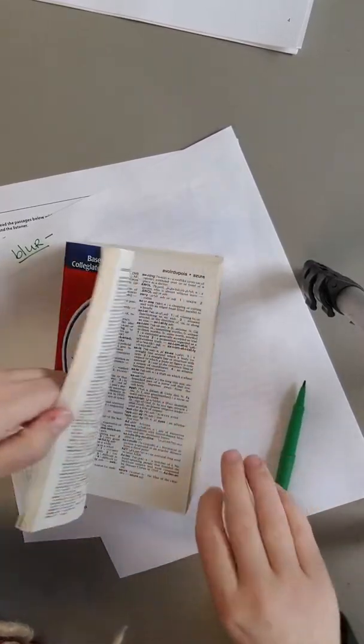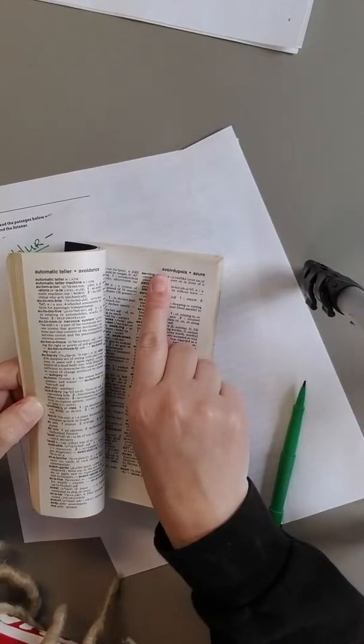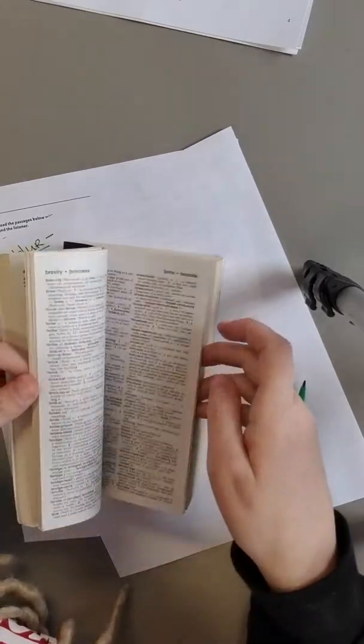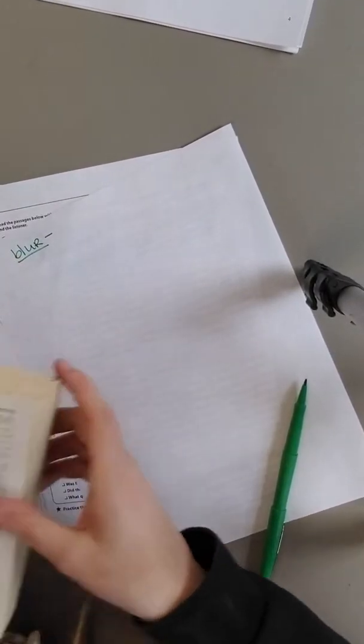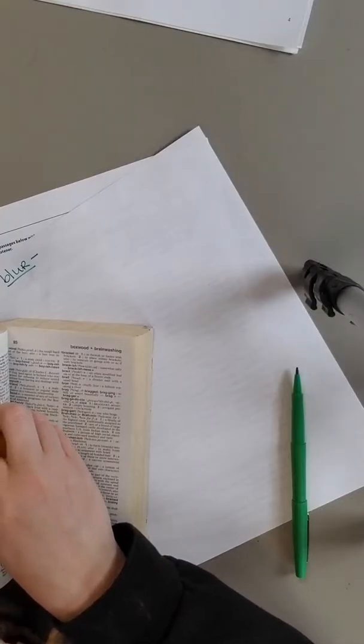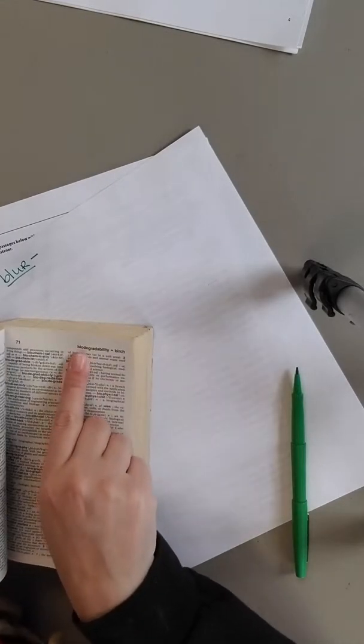To find that word in the dictionary, you're going to look at the top for the words that start with a B. Okay, so here I'm on the B's. Now I need to look for the next letter, L. So O comes after L, so I know I need to go forward.